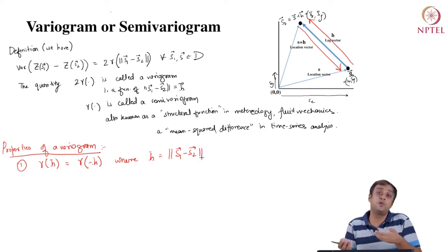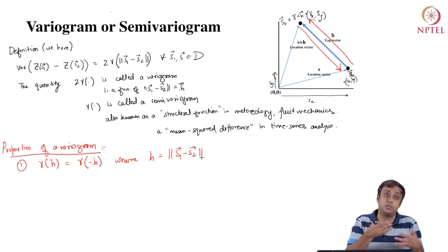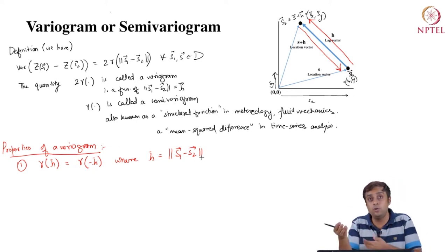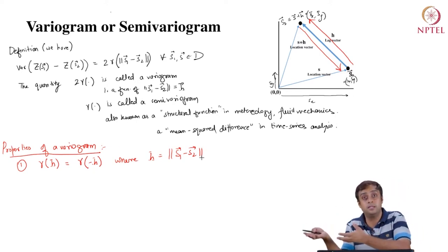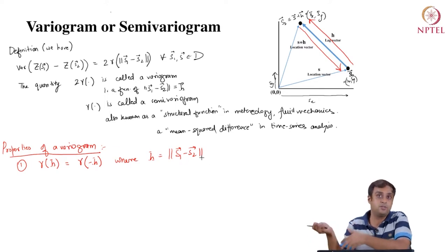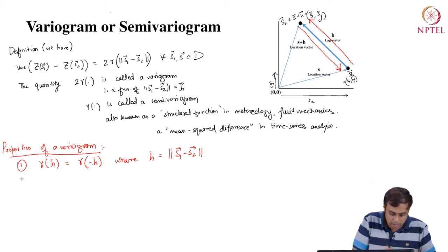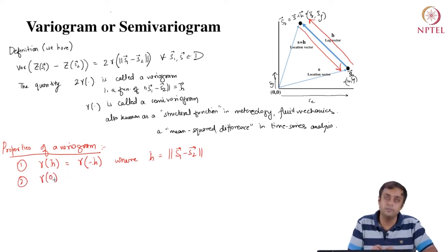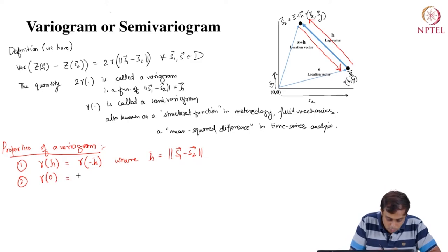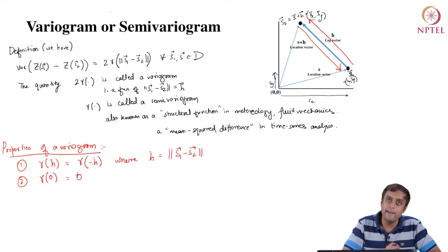Where H is nothing but S1 minus S2, and minus H would be S2 minus S1. The L2 norm of S1 minus S2 is mathematically the same entity as the L2 norm of S2 minus S1.